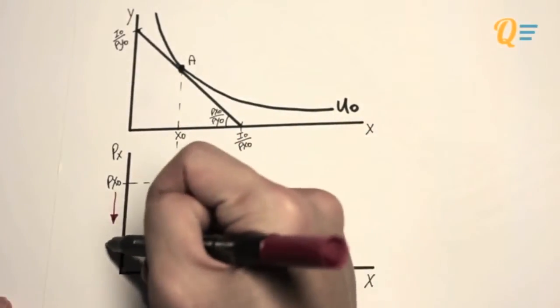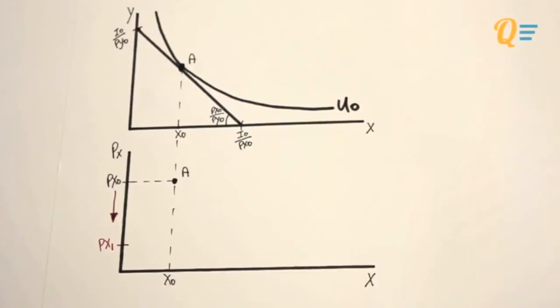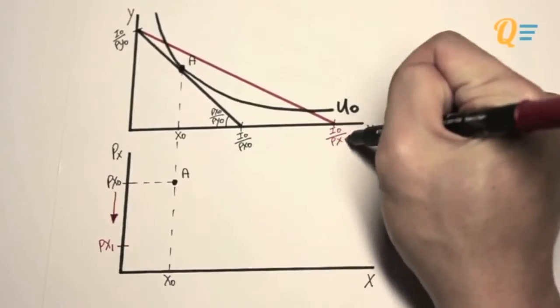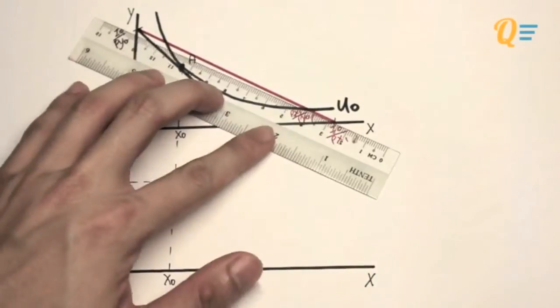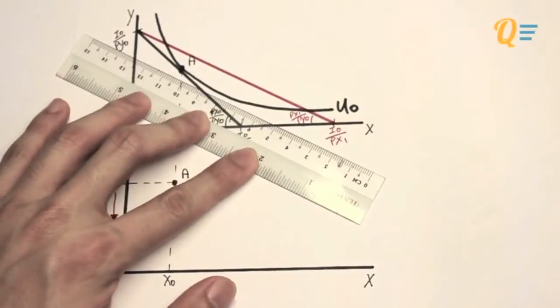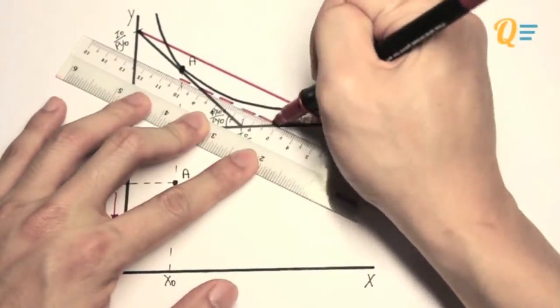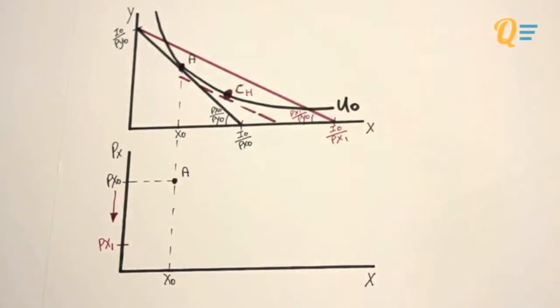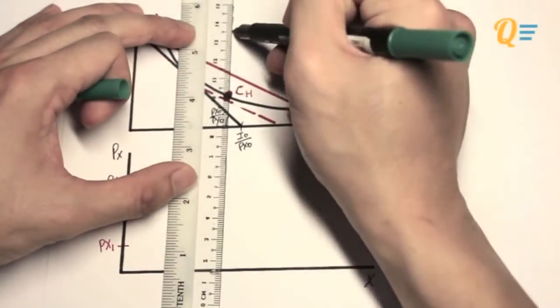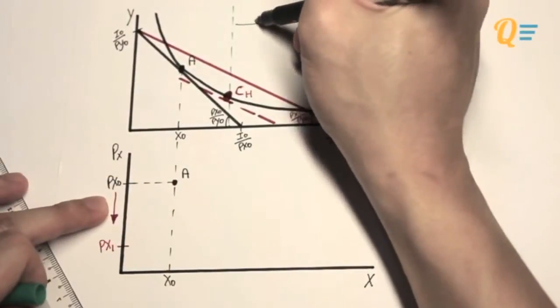So now I'm going to assume that the price of X is going to fall to P1. And when the price of X falls, we know that the budget constraint is going to rotate outwards. And the next thing we have to do is to establish point C, given the Hicksian definition of real income, which is somewhere over there. And since the new budget constraint is on top of the imaginary budget constraint, I know that this individual's real income has increased.